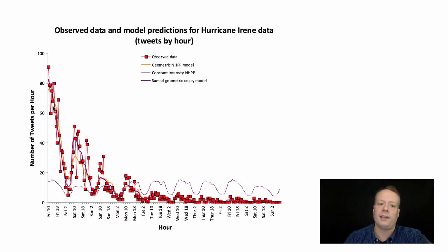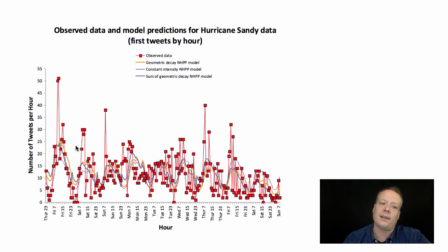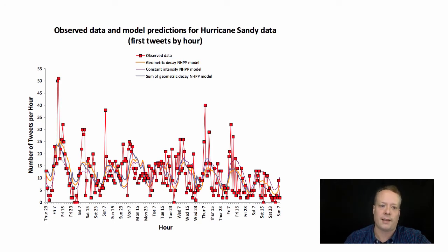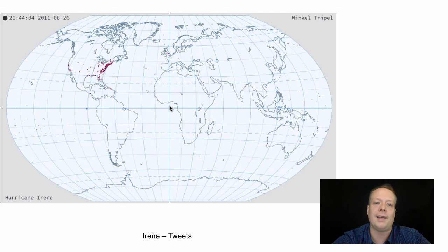In the Irene case, the tweet data — just looking at the number of tweets per hour — started very high and then faded over time, because the hurricane wasn't as bad as feared. The Sandy data is very interesting: it starts low, goes up, keeps peaking every now and then, and the story keeps going as we continue looking at the data.